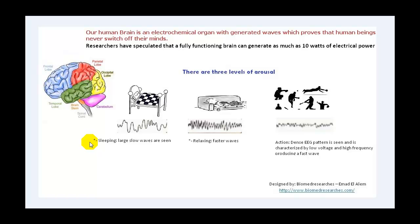In sleeping arousal, large slow waves are seen. In relaxing, the waves become faster. But in action, dense EEG pattern is seen and is characterized by low voltage and high frequency producing fast waves. These are examples of the three arousals. This is the sleeping, and you can see here during the sleeping, slow waves are large and can be easily recognized.